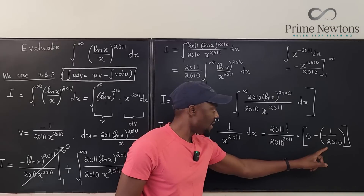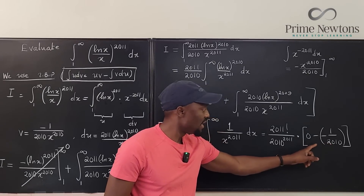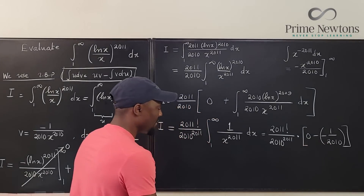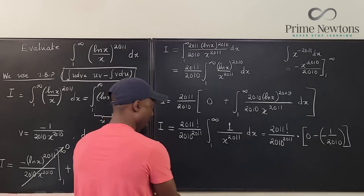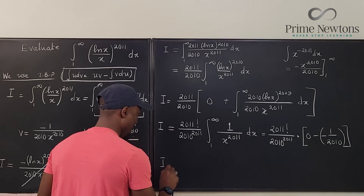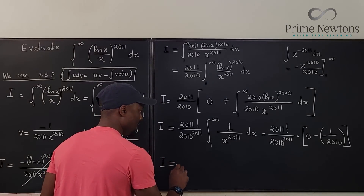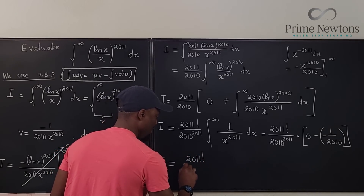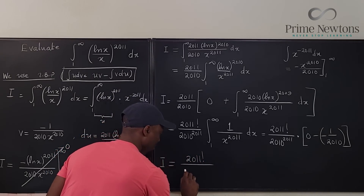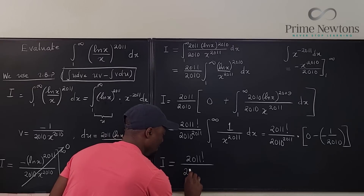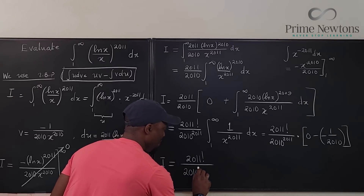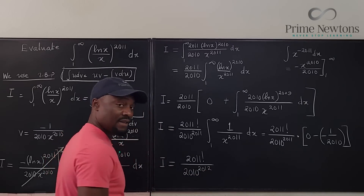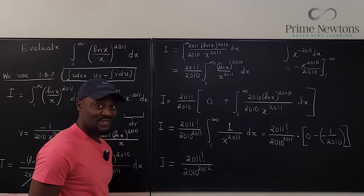That plus sign confirms the final answer. Moving the extra 2010 into the denominator gives us our final answer: I = 2011! / 2010^2012. And there's no plus C since this is a definite integral.